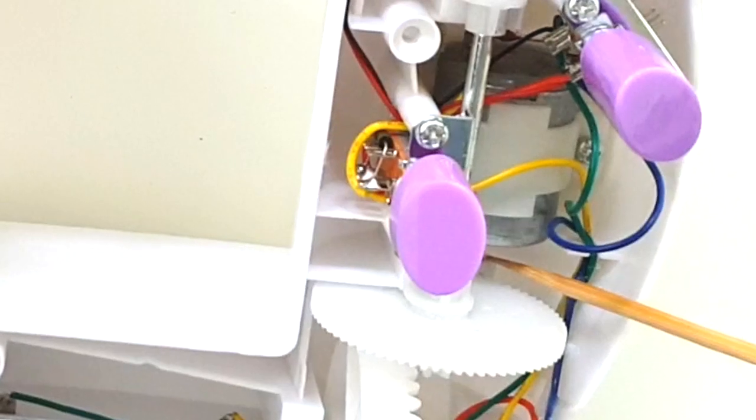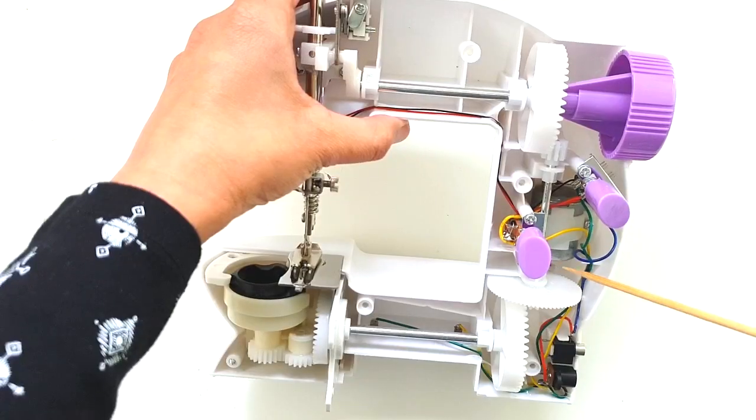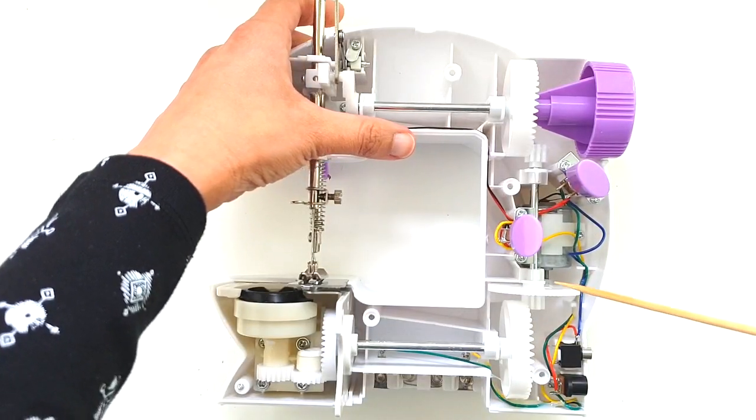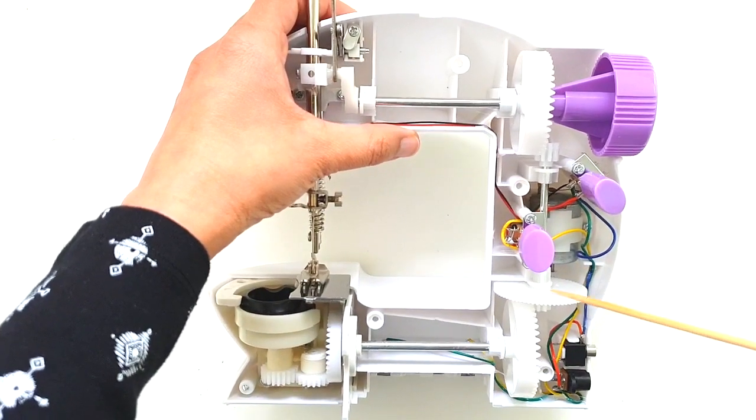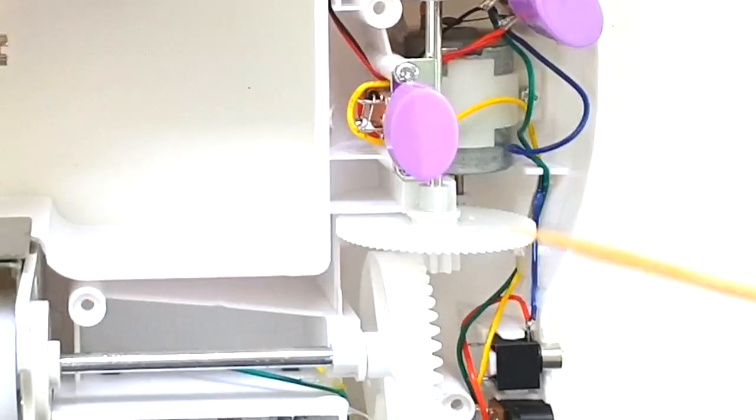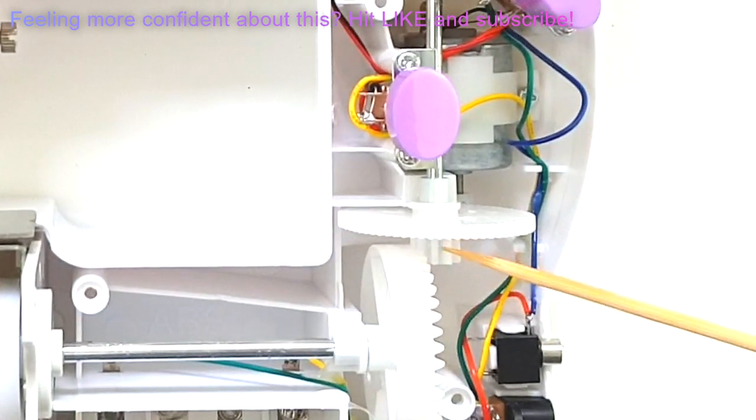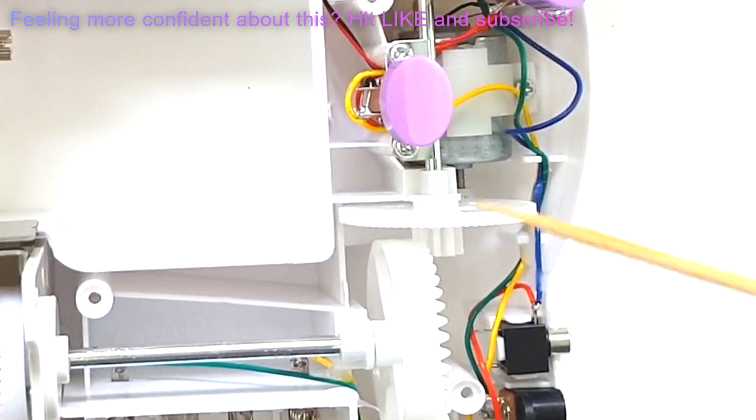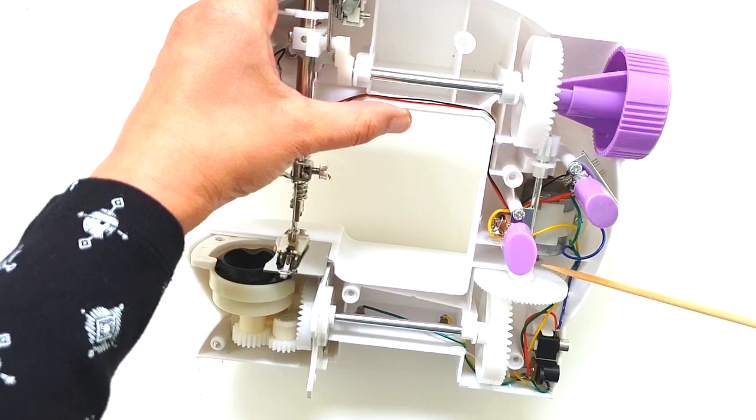That little gear then drives this big gear. Now this big gear actually has two connected parts. They're all part of one single piece of plastic: this big flat plate that you see, and then this little protrusion underneath which is also a gear. This is all part of one plastic piece.